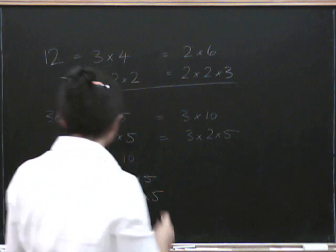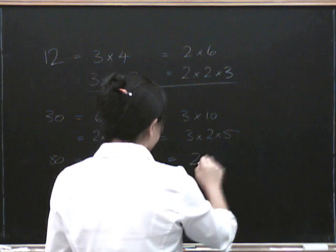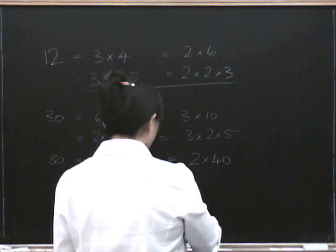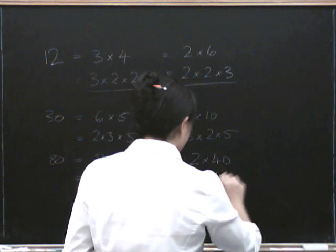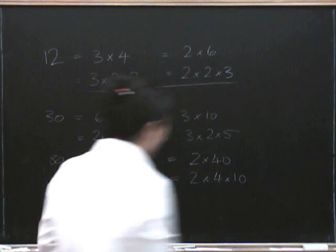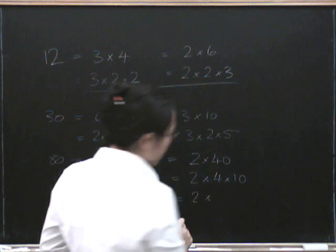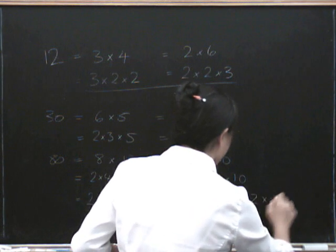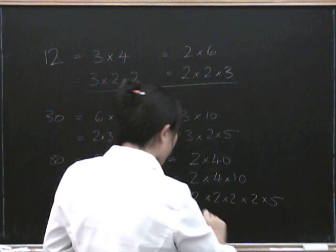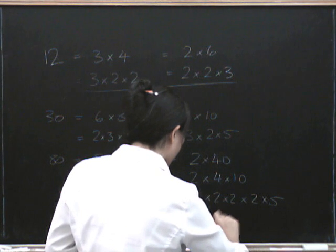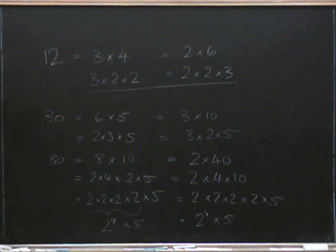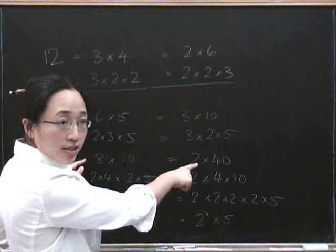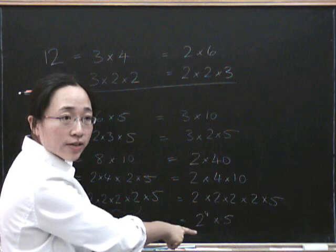We could have started doing this a different way as well, because we could have said 80 is 2 times 40. And we know that 40 is 4 times 10, that 4 is 2 times 2, and that 10 is 2 times 5. So look — we've got the same thing again: four 2s, so that's 2 to the power of 4 multiplied by 5. Despite starting by factorising in different ways, we ended up with the same thing when we couldn't go any further.